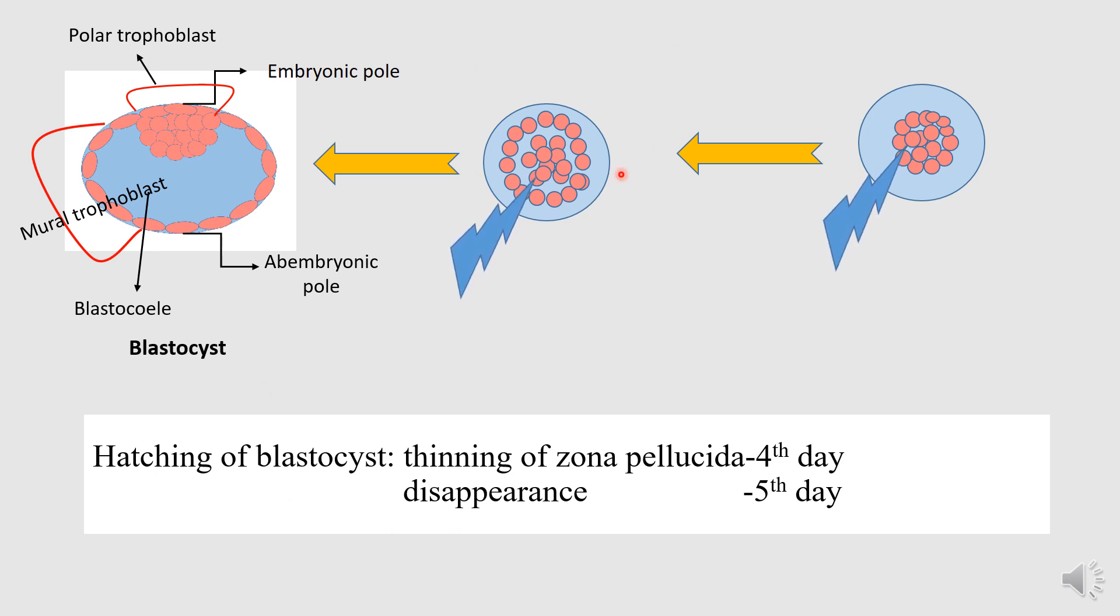Now, actually, you know, what did this zona pellucida do? It was actually preventing the attachment of this zygote to any other site either in the fallopian tube or in any other site of the uterus. So, as there is disappearance of the zona pellucida, it will initiate the attachment of this trophoblastic cells to the correct site of the uterine epithelium.